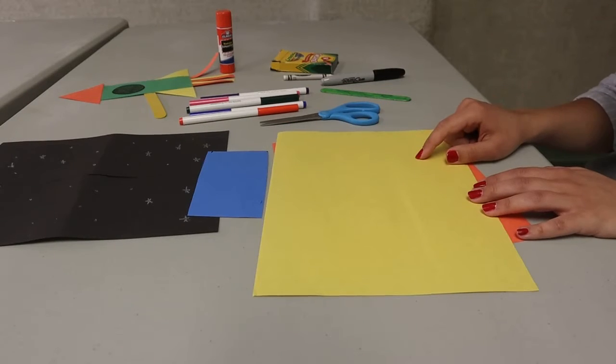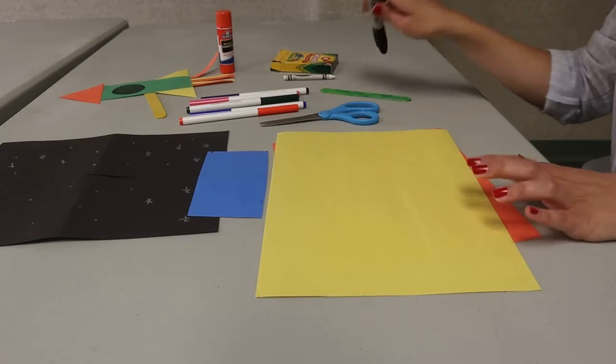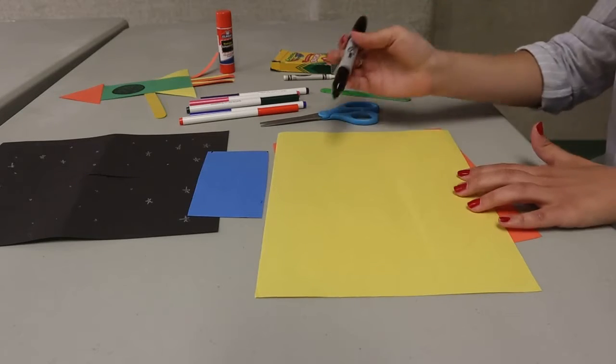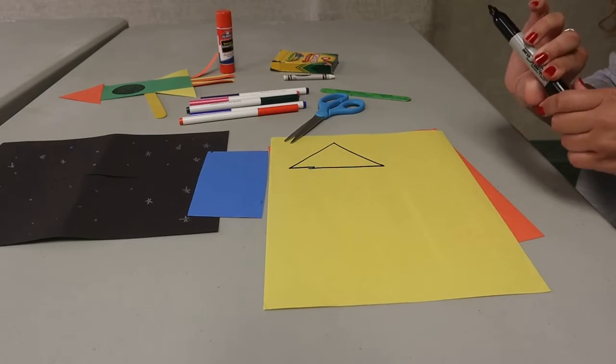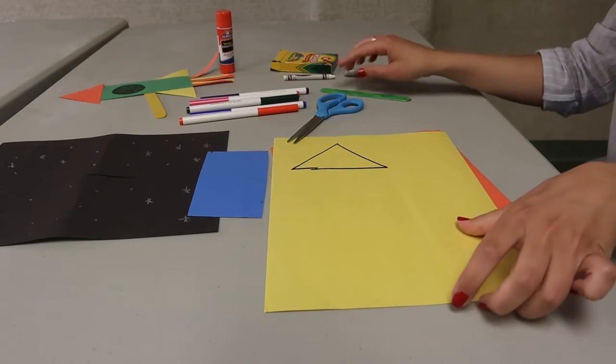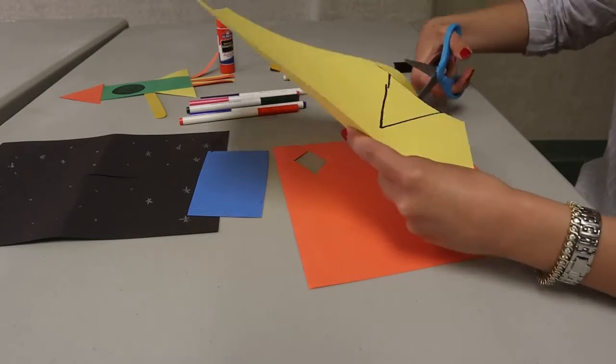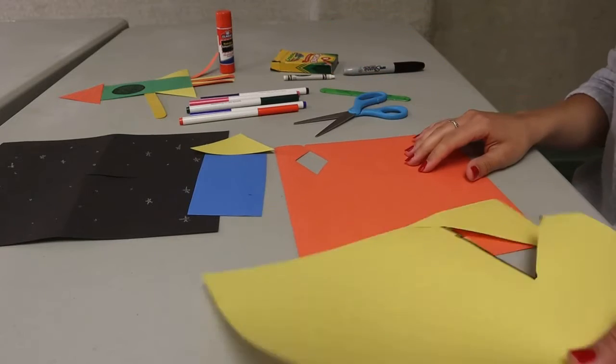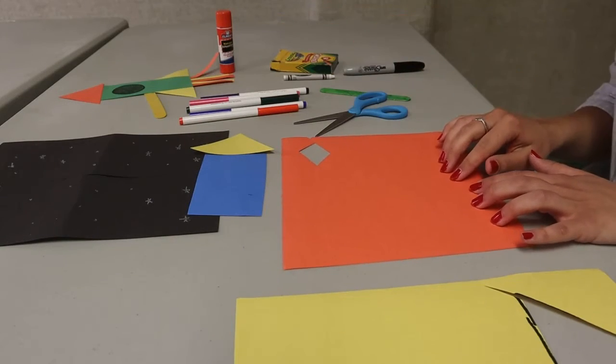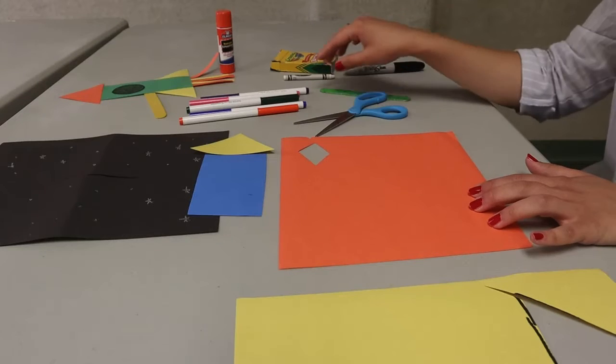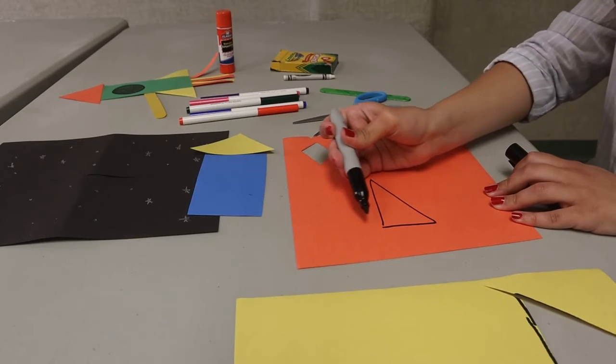Now I'm going to make the roof of my spaceship, which will be a triangle. So I'm going to take my marker and I'm going to draw a triangle shape. And I'm going to cut that triangle shape out.